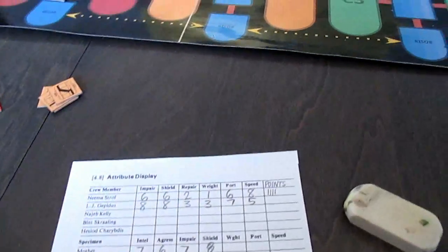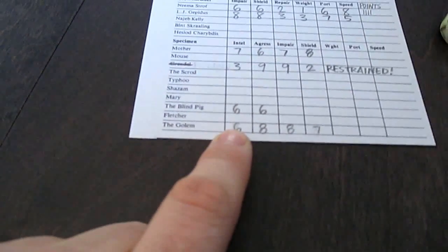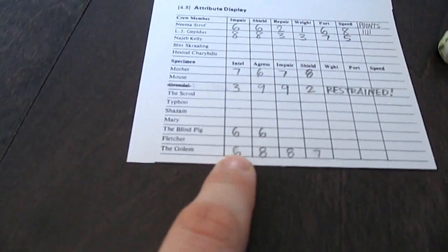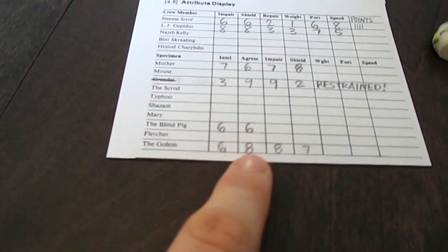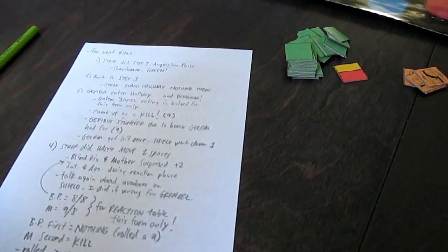Intelligence rating for the golem was halved for this round, so that just meant we were using that as a three when we looked at our chart. A three and an eight. It ended up being as a kill.